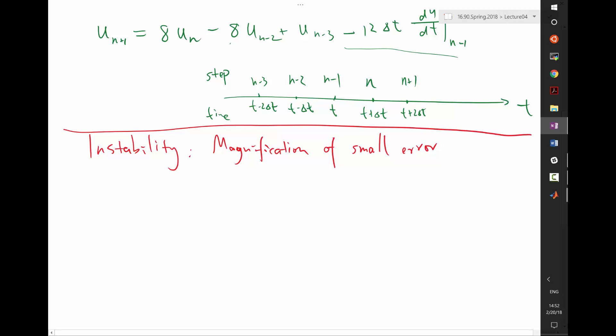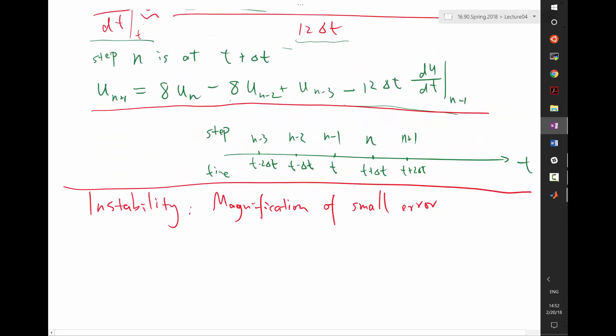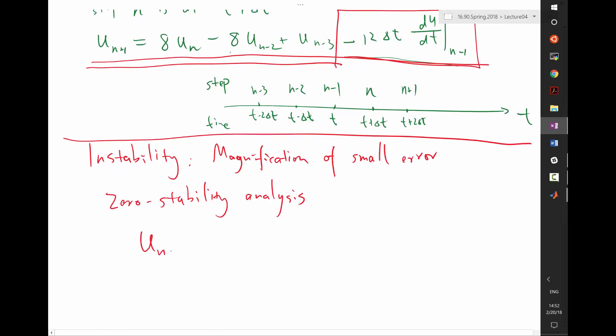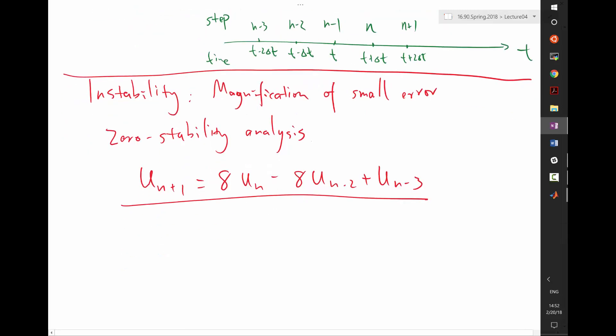So let's actually figure out to look at this equation and perform the so-called zero stability analysis. So zero stability analysis is basically forgetting about this term, assuming du/dt is equal to zero. So I just have a scheme u_{n+1} equal to 8 times u_n minus 8 times u_{n-2} plus u_{n-3}. Okay, let's analyze this scheme is stable or not.